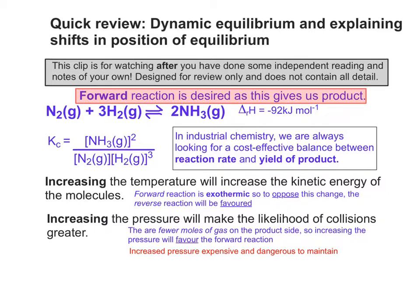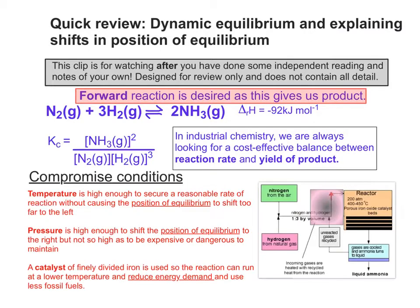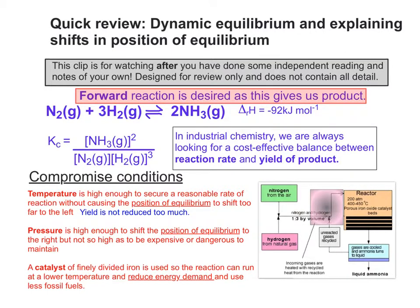So we use what are called compromised conditions. The temperature must be high enough to secure a reasonable rate of reaction without causing the position of equilibrium to shift too far to the left, which would reduce yield. The pressure is kept high enough to shift the position of equilibrium to the right, but not so high as to be expensive or dangerous to maintain. A catalyst — finely divided iron — is used so the reaction can run at a lower temperature, reducing energy demand and use of fossil fuels.